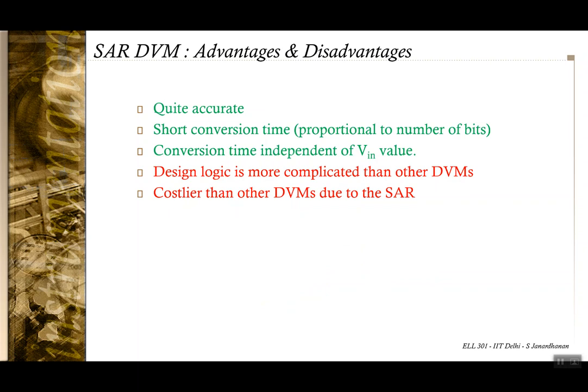The advantages of the successive approximation register DVM: it is very accurate, and the conversion time is proportional to the number of bits rather than to the value of VIN — it is always proportional to the number of bits being compared, never to the input value. However, due to the presence of the approximation register, the design logic is more complicated and more costly than the other three DVM types.